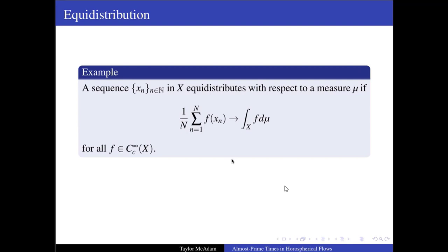If we wanted to consider a continuous flow instead of a sequence, we would replace the sum with an integral at time T and take T to infinity, and so forth. We also say that equidistribution is effective if the rate of convergence is known.